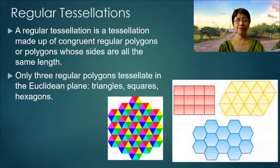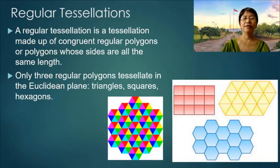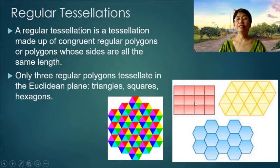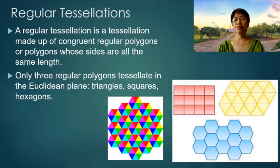Regular tessellations. A regular tessellation is a tessellation made up of congruent regular polygons or polygons whose sides are all the same length. Only three regular polygons tessellate in the Euclidean plane and these are triangles, squares, and hexagons. They fit together perfectly as in the figures on the right.